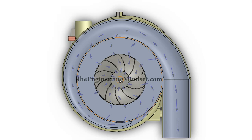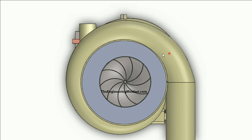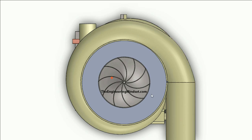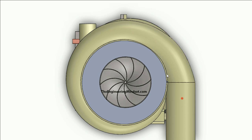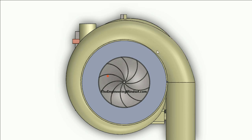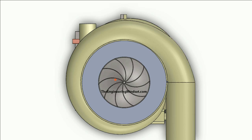The refrigerant flies in, and as it's flung off this compressor, it travels in all directions, collecting up in the volute and going off into the condenser. You can see that in this animation here — the particle flows off, the impeller rotates and flings it outward, collecting in the volute and building up in pressure, then making its way down to the condenser.